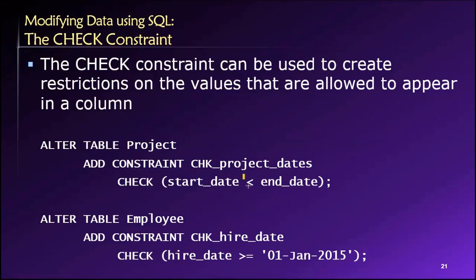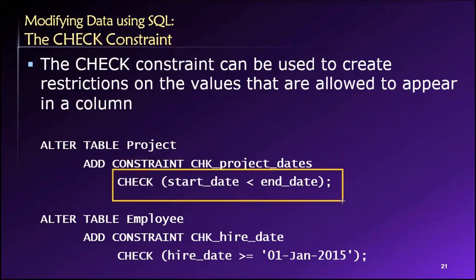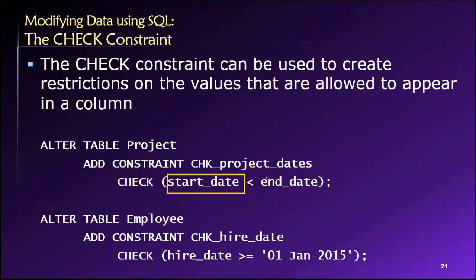Otherwise we might have to use less than or equal to. So if this check constraint were in place and we tried to add a new project record to the project table, before the database would add that information to the table and make it permanent, it would do this check and say: is the start date less than the end date? If so, everything's fine and we can add that row. If not, we get an error message and that proposed row of data will not be added, thereby ensuring that this potential mistake does not become part of our official organizational data.